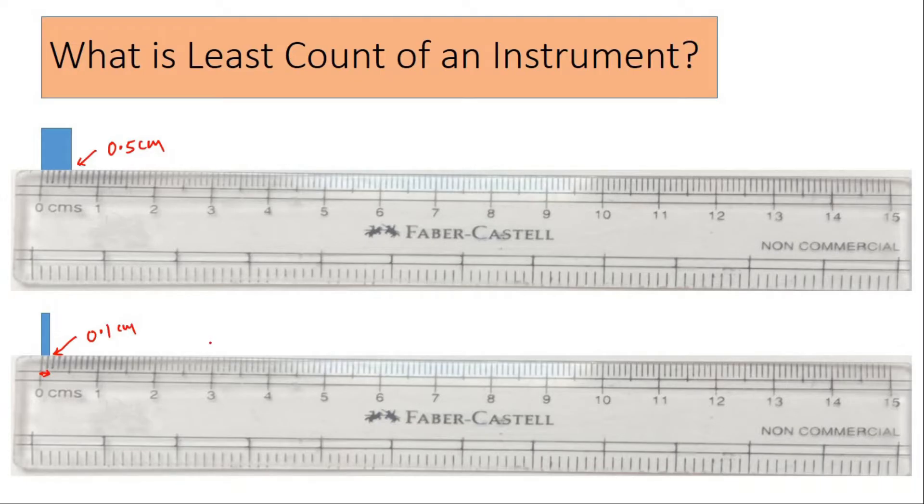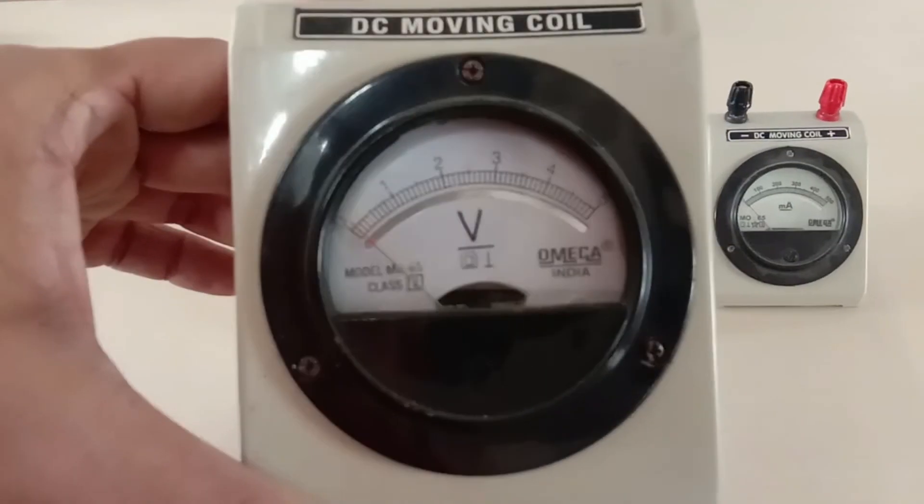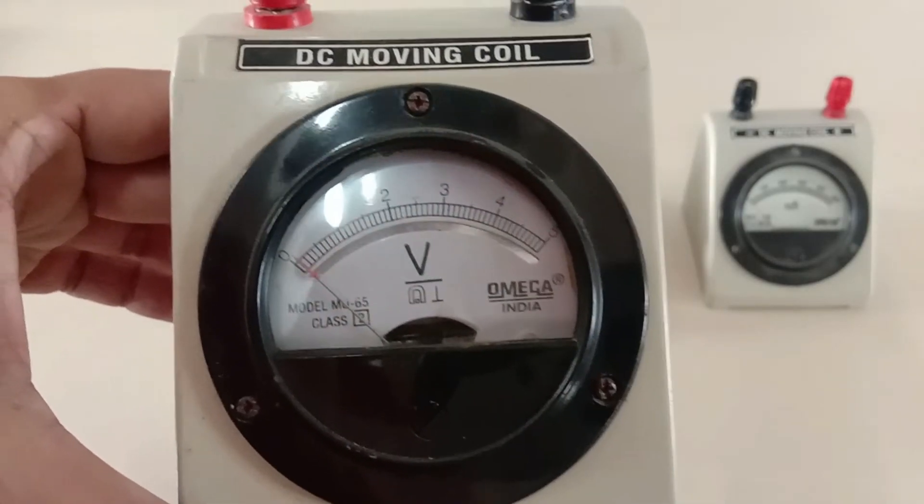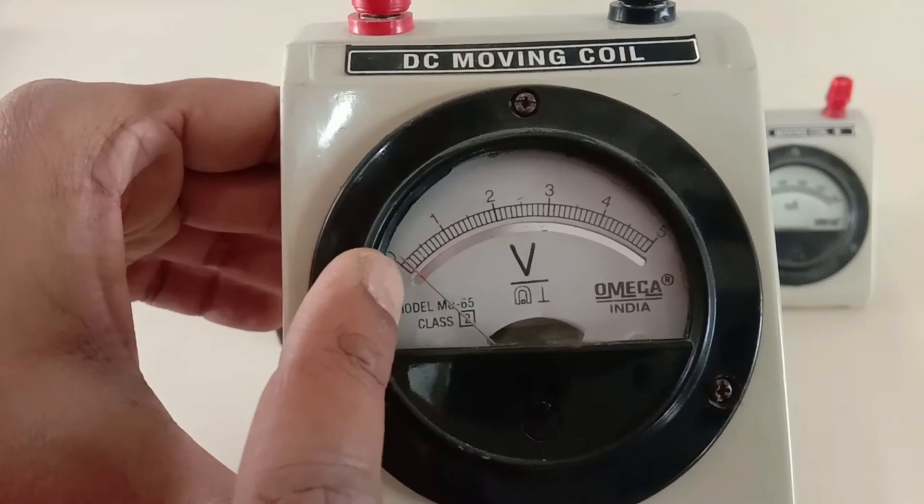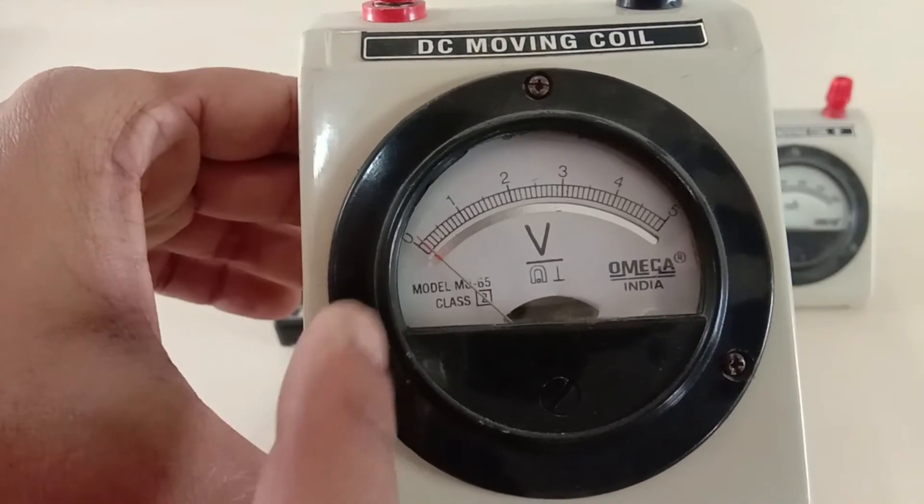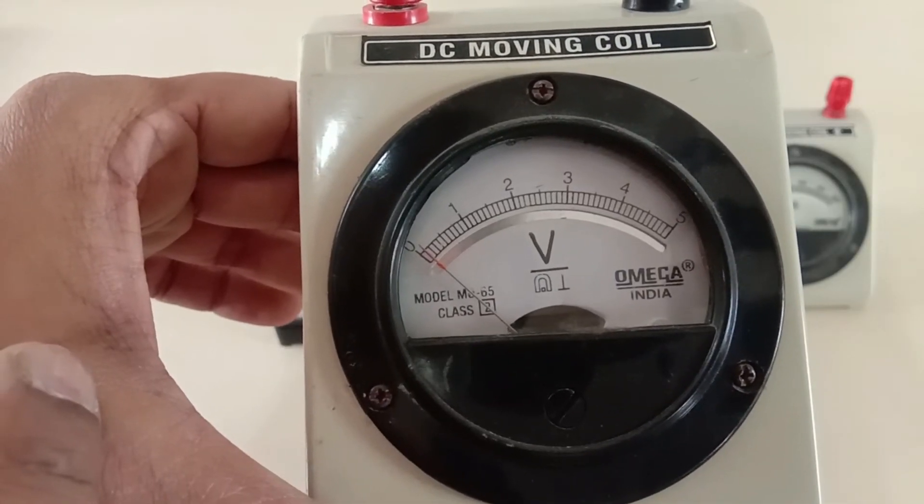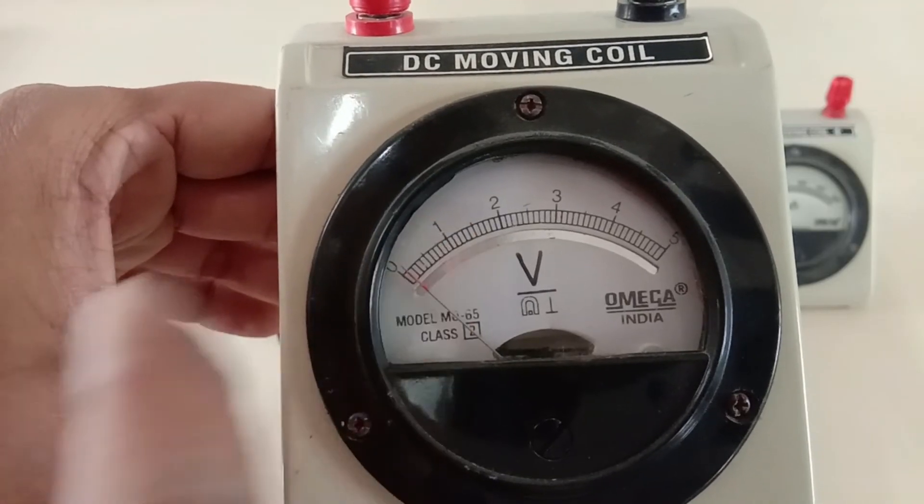Here we have a voltmeter in front of us and you can see very clearly that this can only measure up to 5 volts, from 0 to 5 volts. The difference between 0 and 1 are shown by 10 divisions, so there are 10 divisions between 0 and 1.